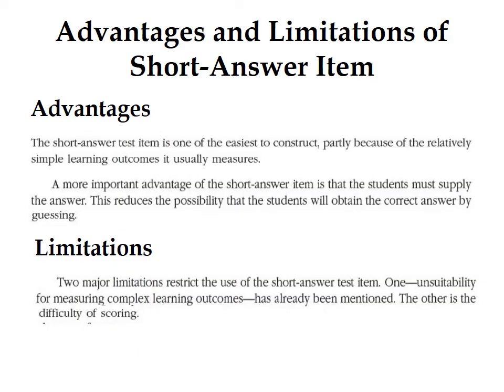Advantages and limitations of the short answer item: The first advantage is that the short answer item is easy to construct because it measures relatively simple learning outcomes. The second advantage is that the student must supply the answer, which reduces the possibility of obtaining the correct answer by guessing. The two limitations are: first, it is unsuitable for measuring complex learning outcomes, and second, it has difficulty in scoring.